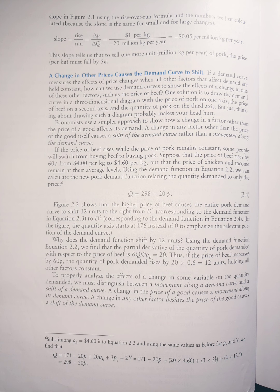Figure 2.2 shows that the higher price of beef causes the entire pork demand curve to shift 12 units to the right from capital D superscript 1 corresponding to the demand function in equation 2.3 to capital D superscript 2 corresponding to the demand function in equation 2.4.